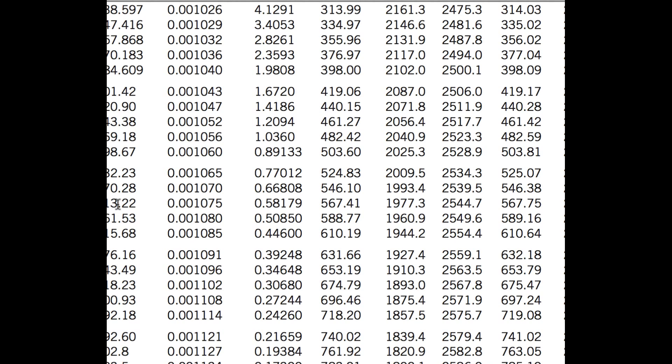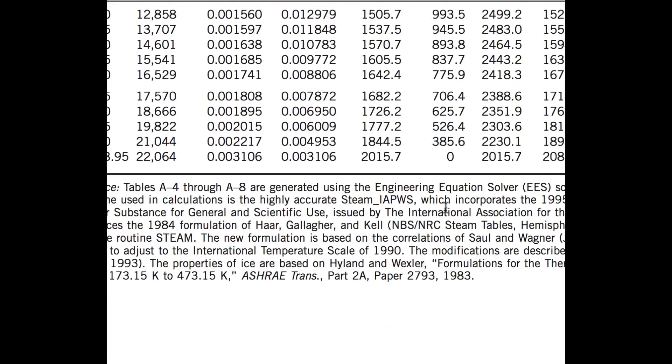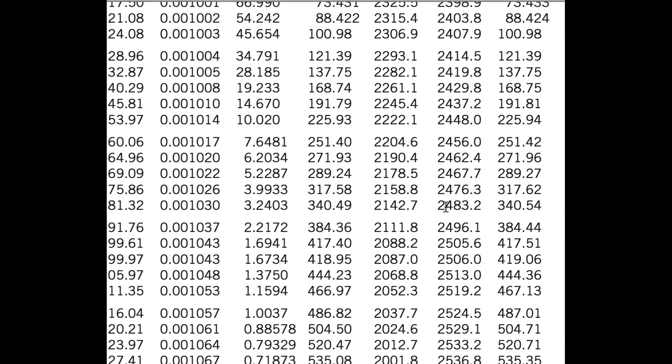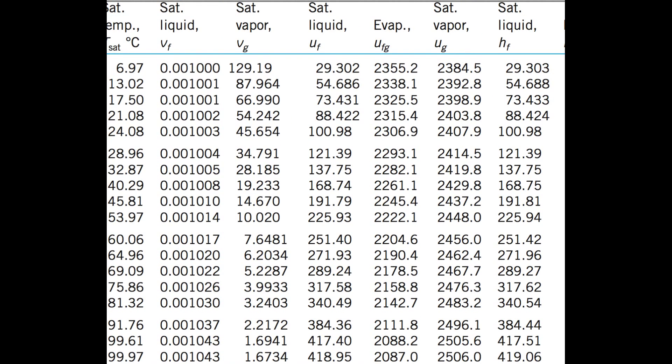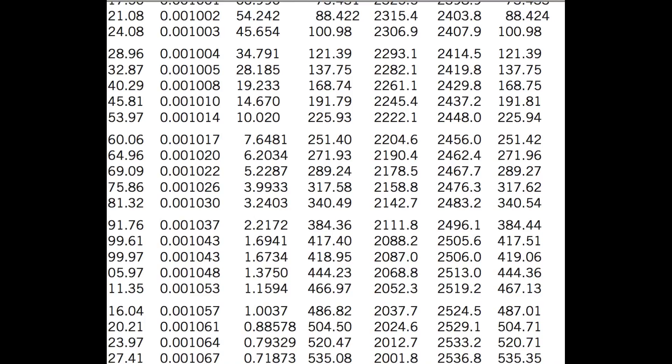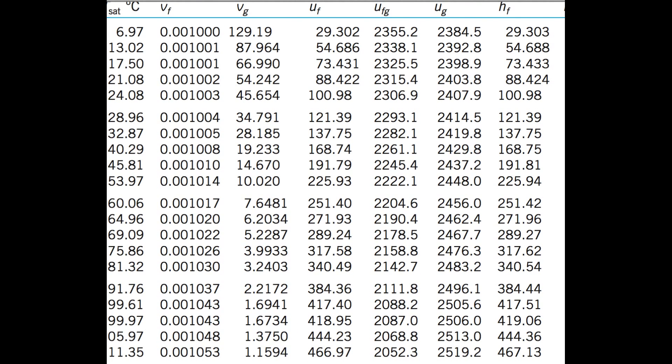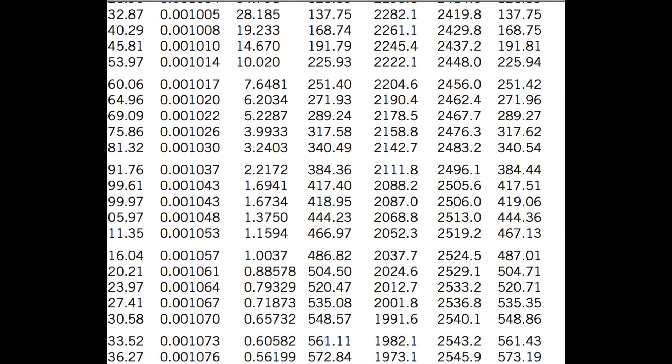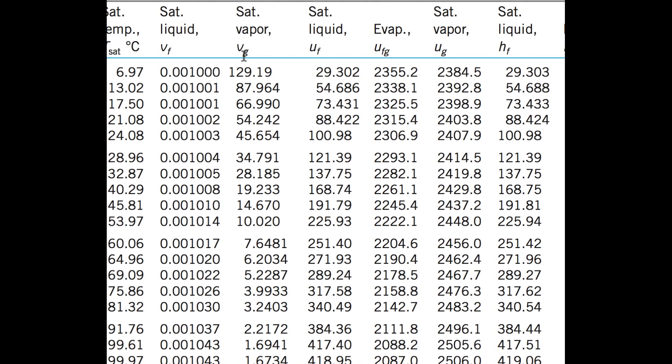So at a pressure of 300 kilopascals, which is not here - actually we could use the saturated temperature of 300 kilopascals. We know that the temperature inside of the chamber at this condition is 133.52, but that doesn't really help us. What we want is the specific volume at state 1. We can take this specific volume at state 1 here. We know it's a saturated vapor.